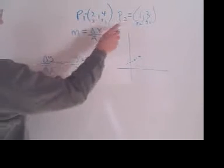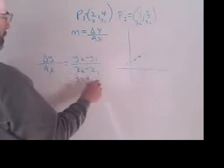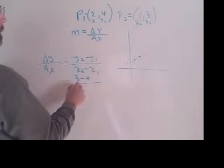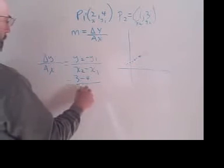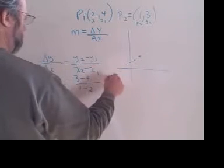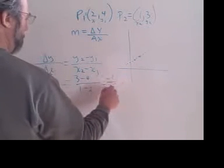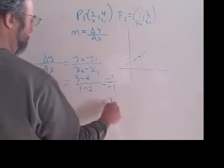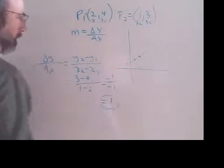Now we plug and chug. y2 is 3, y1 is 4, x2 is 1, x1 is 2. And I do the math. 3 minus 4 is negative 1. 1 minus 2 is negative 1. Negative 1 over negative 1 is 1.